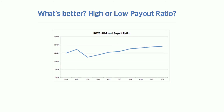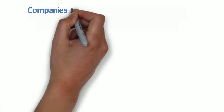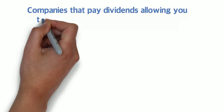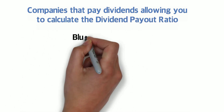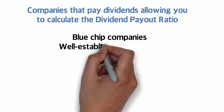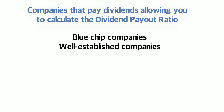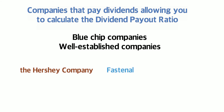Now, not all companies pay out dividends. Companies in their growth phase, such as Snapchat and Tesla, invest all their earnings into growing their companies. Most companies that pay out a dividend are mature and stable companies who have been in business for a long time. Once a company starts paying out a dividend, it does its best to keep its shareholders happy by continually paying dividends and even increasing the payout.